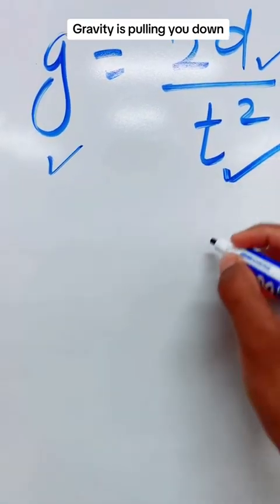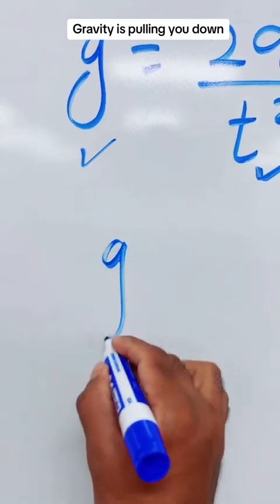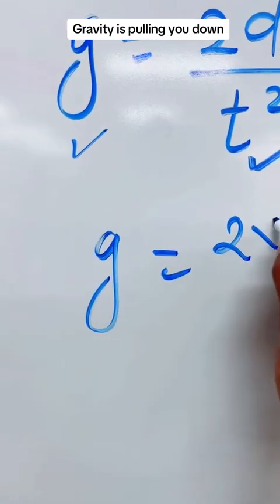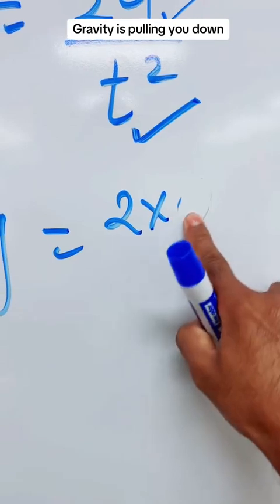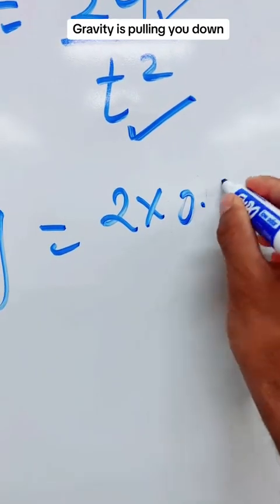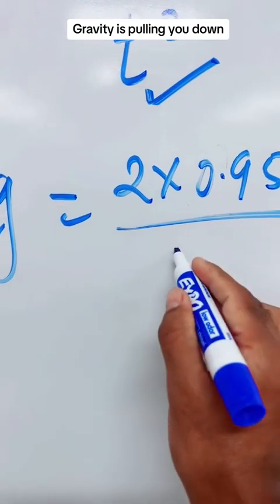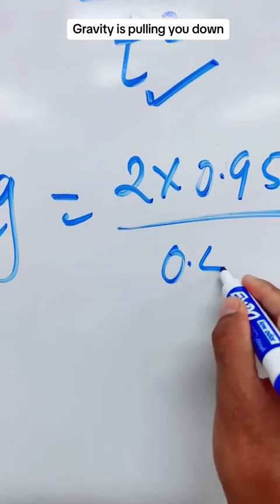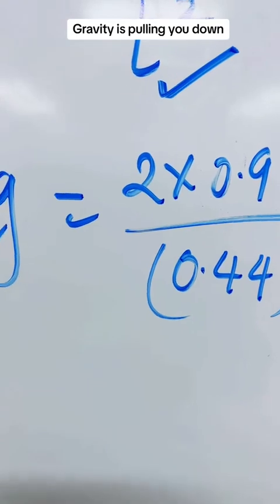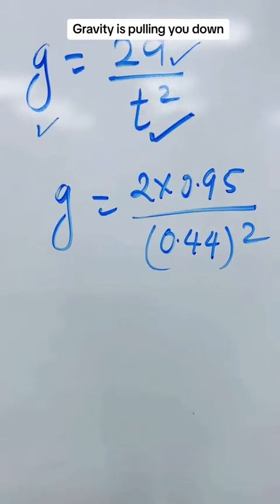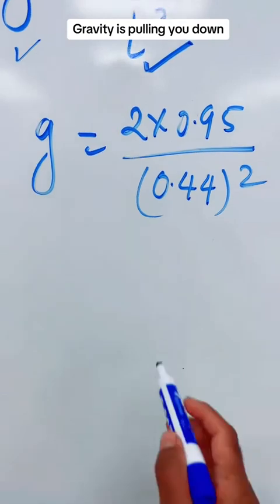So g is equal to 2 times h — which is 0.95 — divided by t squared. When I put 0.44 squared into my calculator and compute, I get the result.